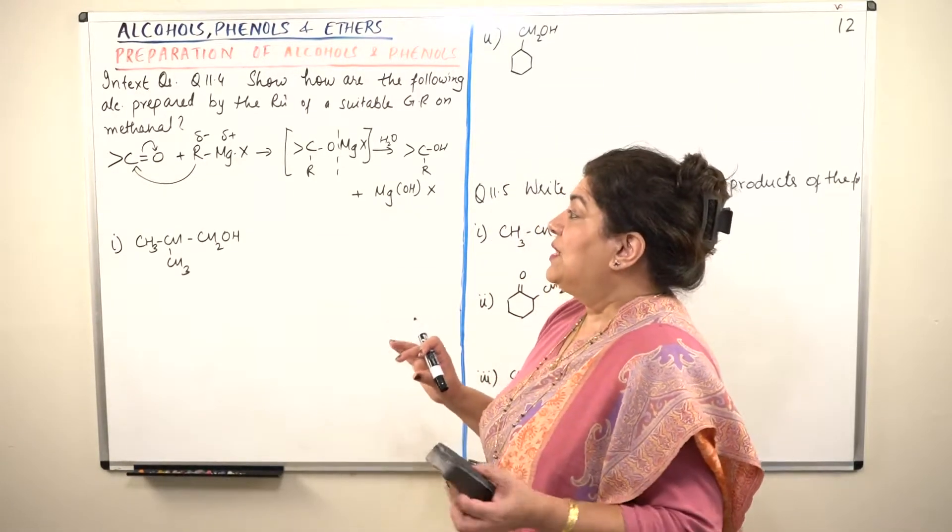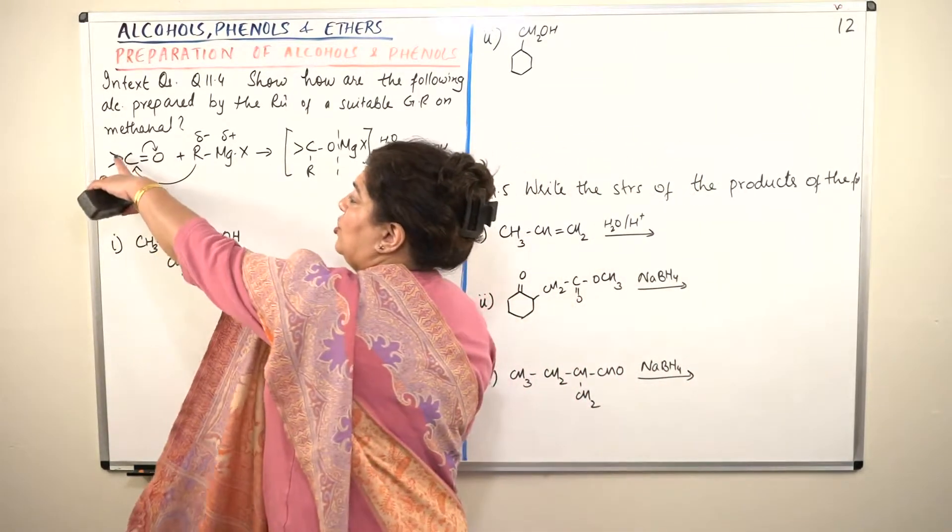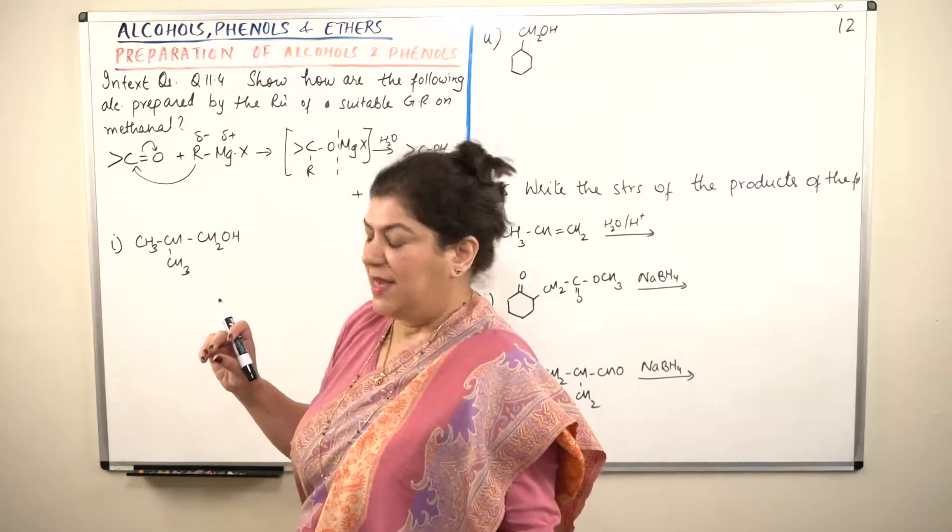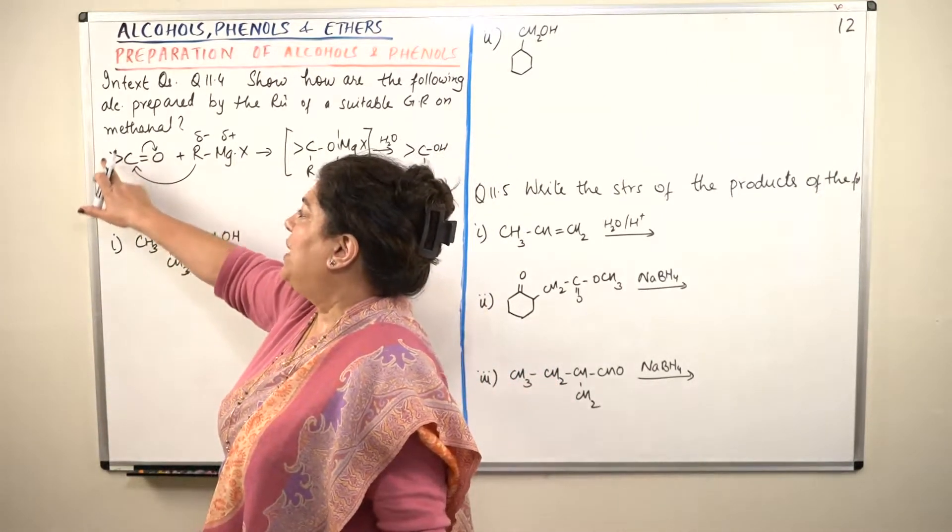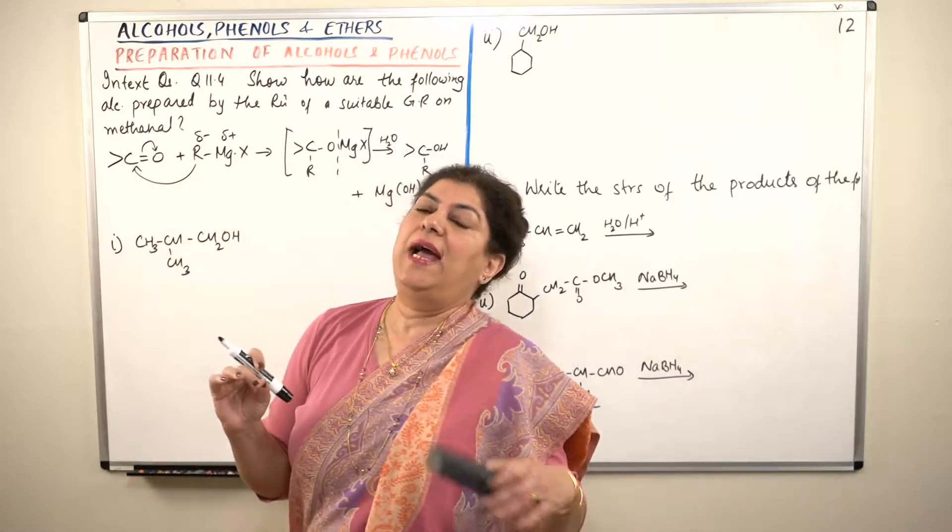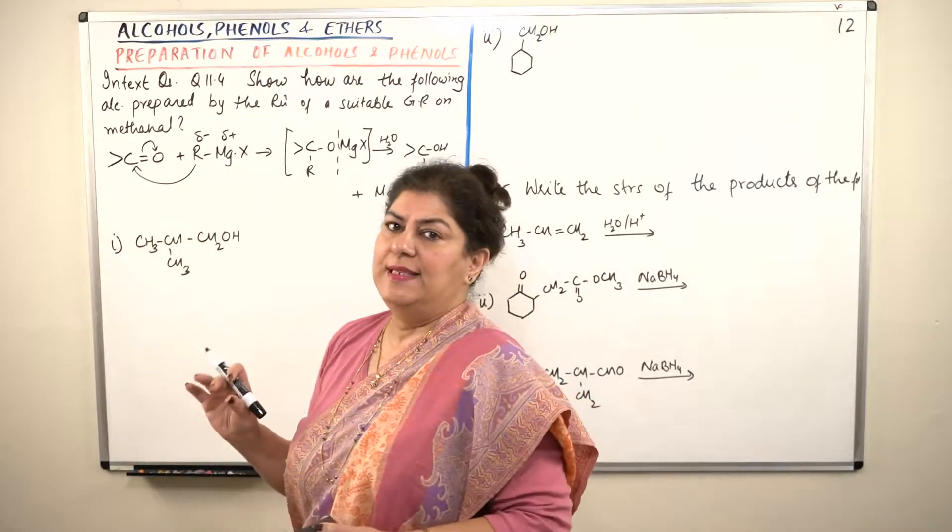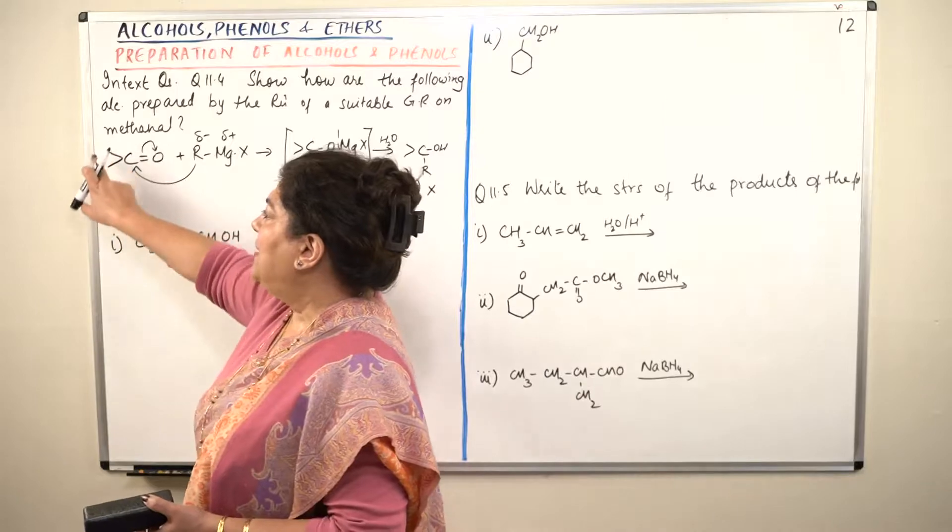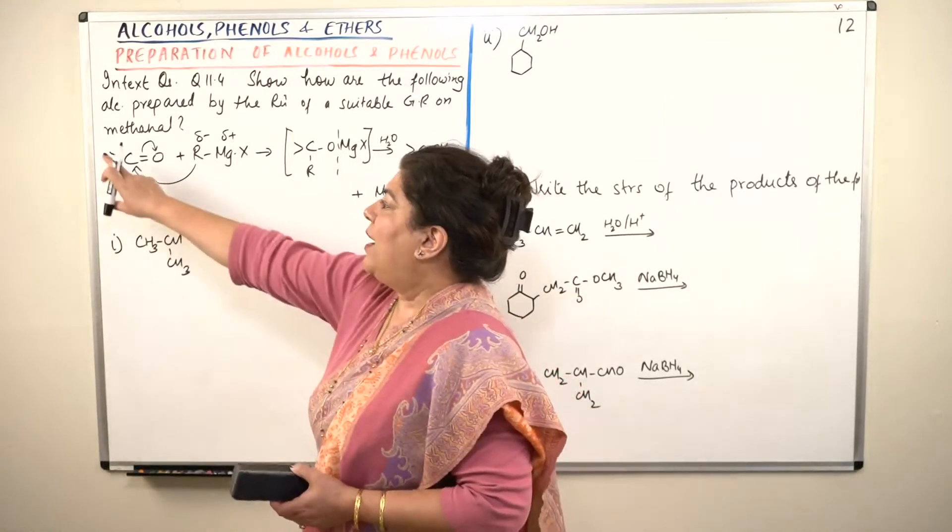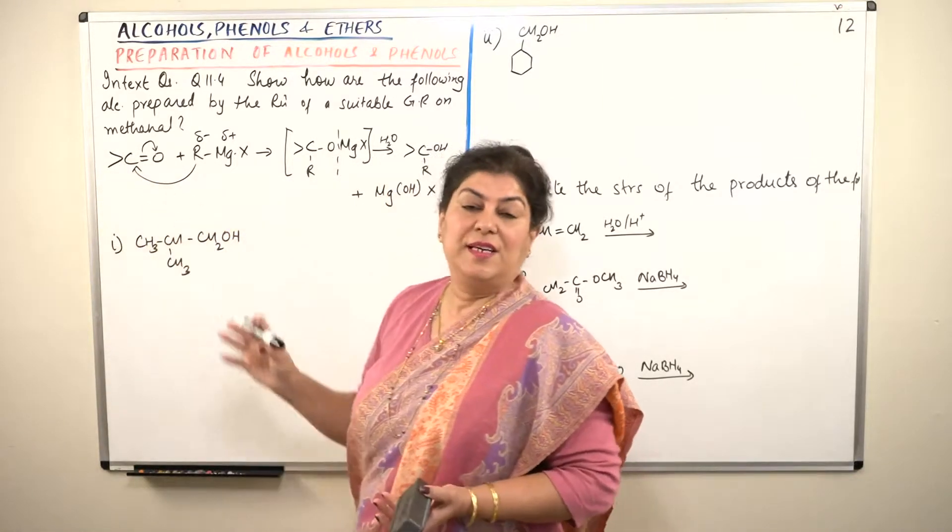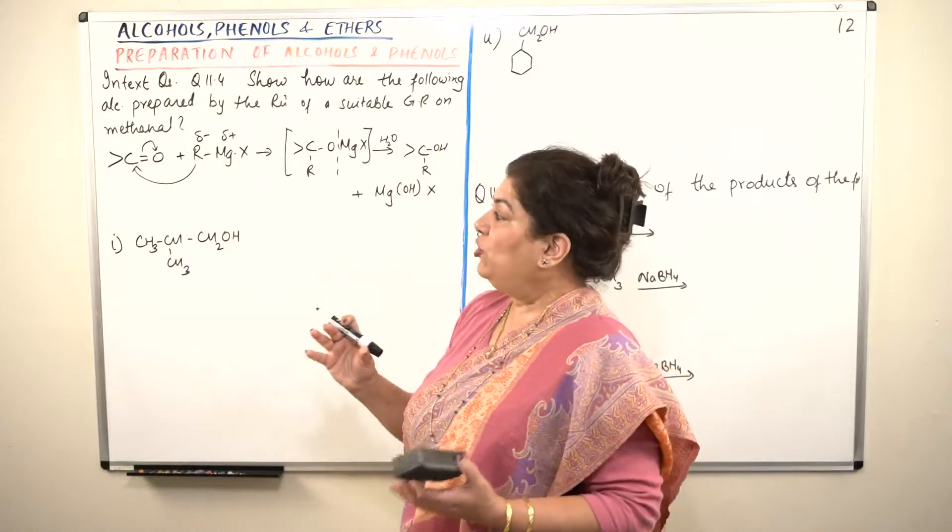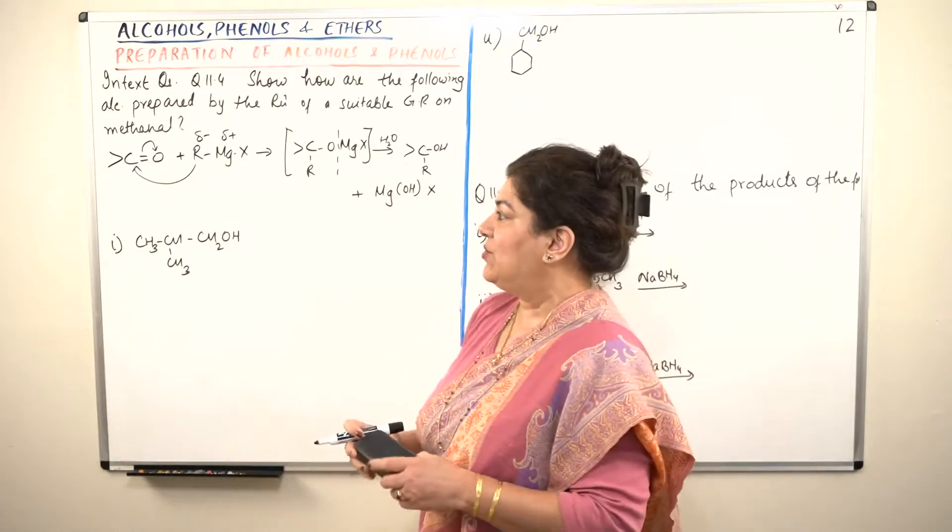If it was an aldehyde, the two species attached to this carbon would be hydrogen and hydrogen or hydrogen and any other alkyl group. Then it is an aldehyde. If both of these are alkyl groups, that is R-C-O-R, then it is a ketone. So both aldehydes and ketones will be showing this reaction.